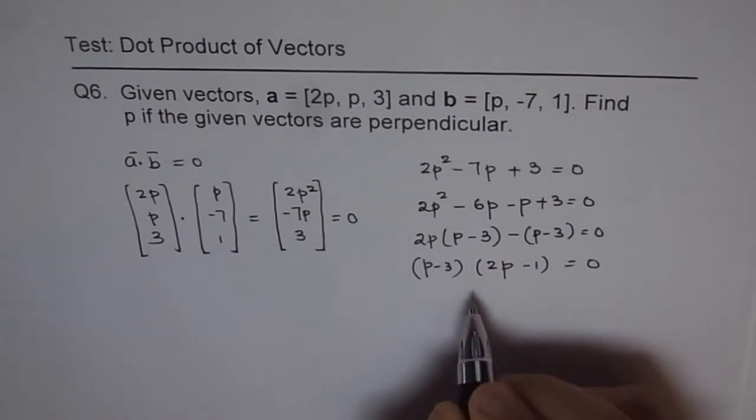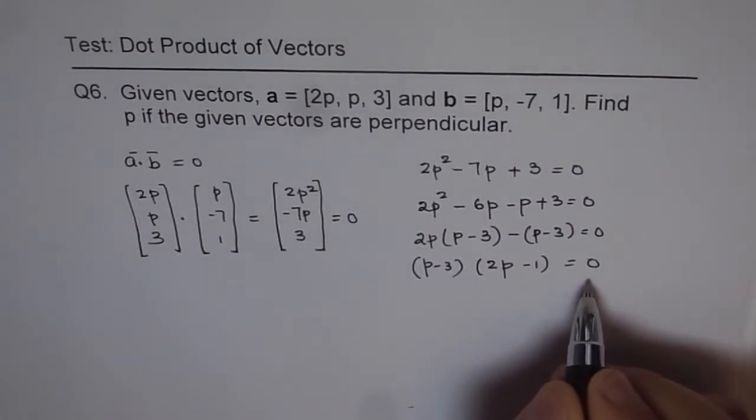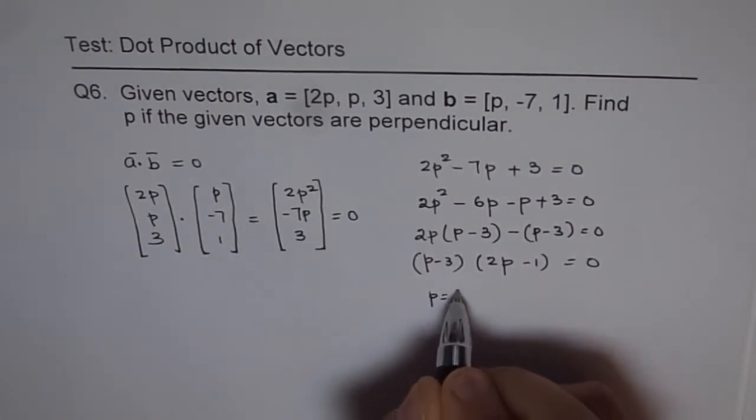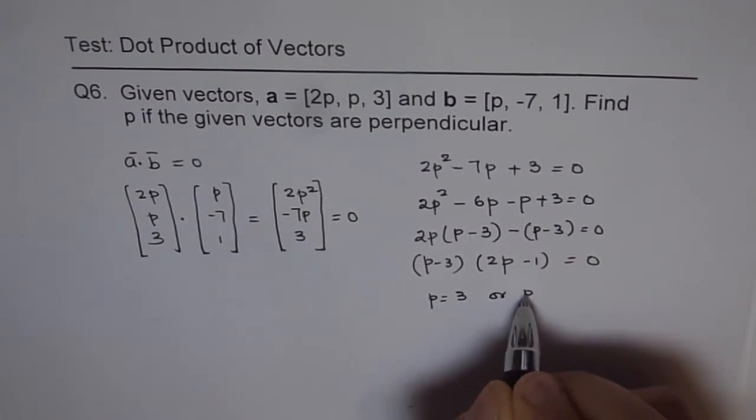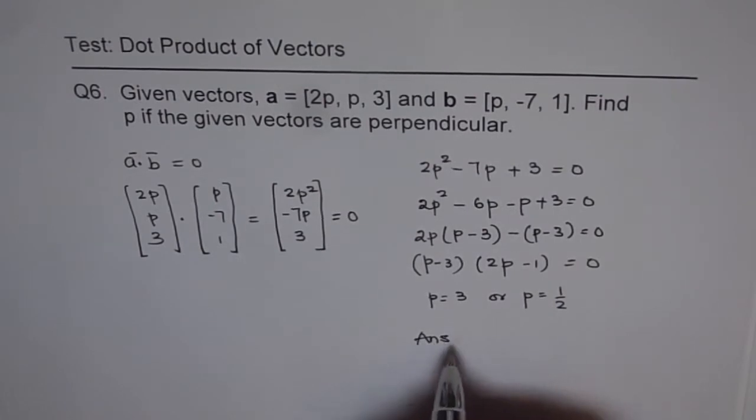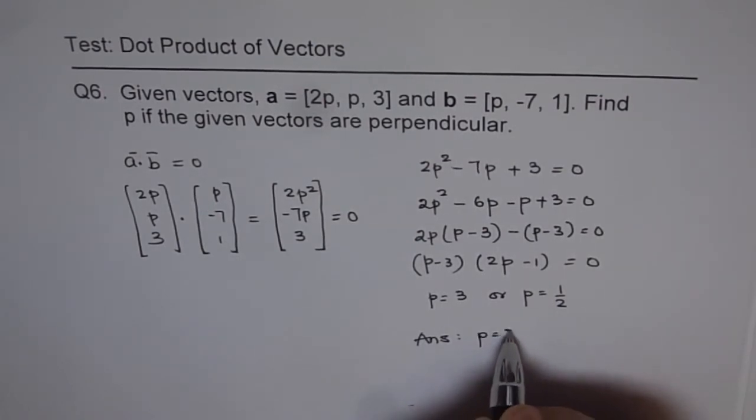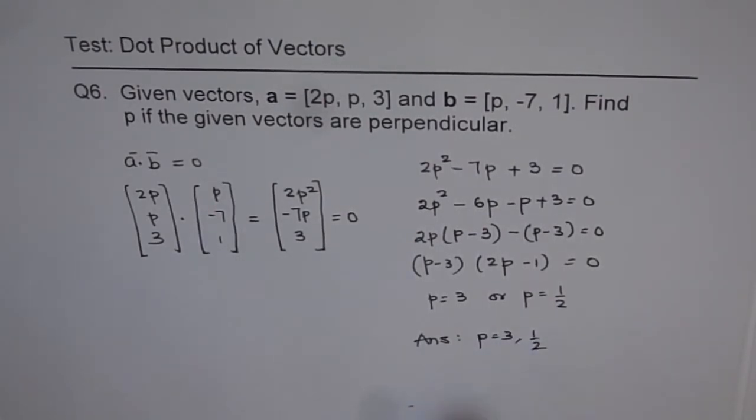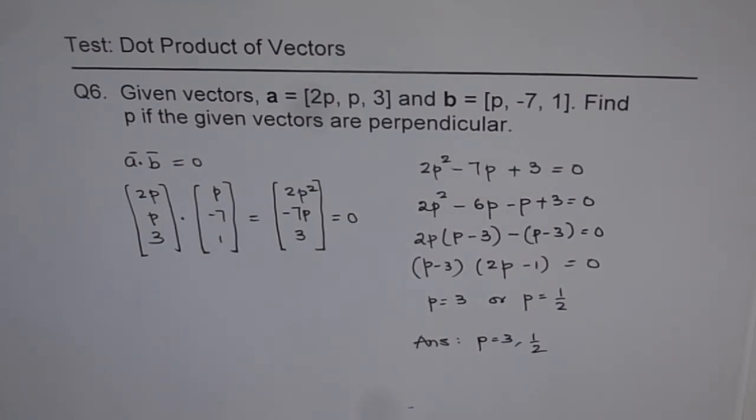And therefore, for this equation to be true, P is equal to 3 or P is equal to half. So that is the solution. We get the answer as P equals to 3 or half. That is how it is to be solved. Thank you.